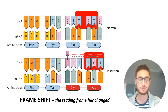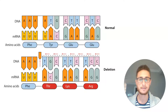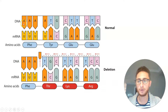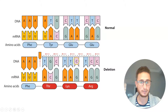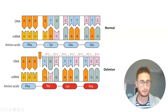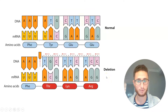Here you can see a very similar situation, but instead of adding in a nucleotide, we've removed one. There used to be four A's here, and now we've only got three. Once again, you can see the entire reading frame has changed — ATG is now TGC. So we've got an entirely different amino acid sequence from everything after that point.